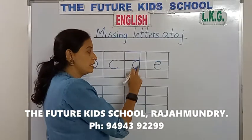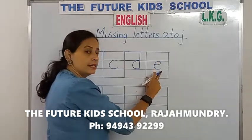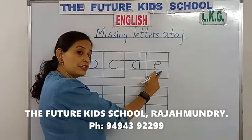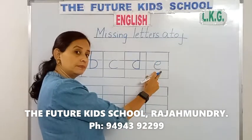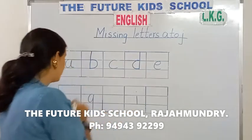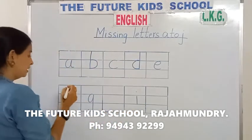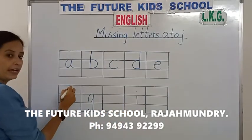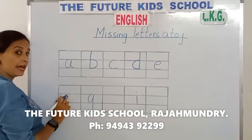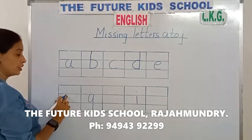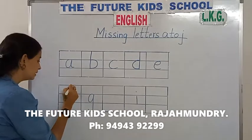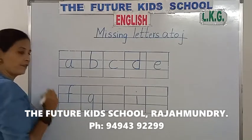After D is E. And what comes after E children? Yes, the letter F. So we need to write the letter F over here children. The missing letter is the letter F.